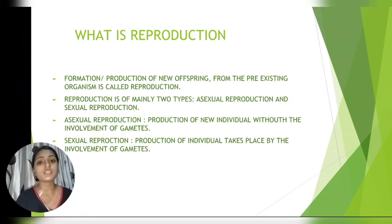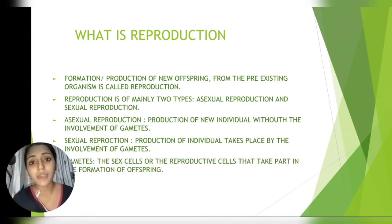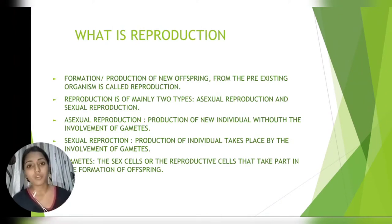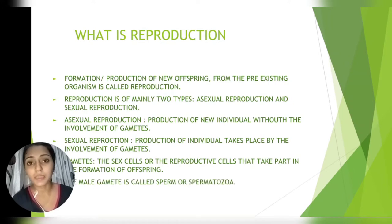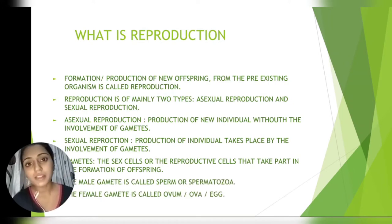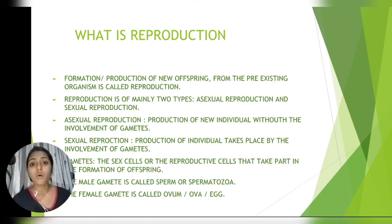Now the question arises: what is a gamete? A gamete is the sex cell or reproductive cell that takes part in the formation of offspring, that is, reproduction. The male gamete is called sperm or spermatozoa, while the female gamete is known as ovum, ova, or egg.